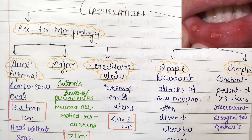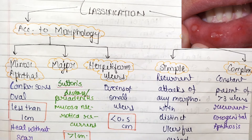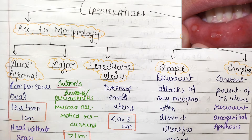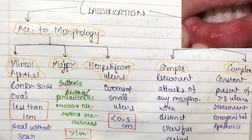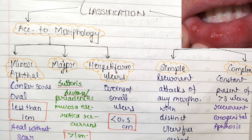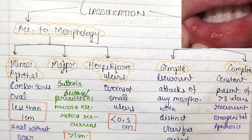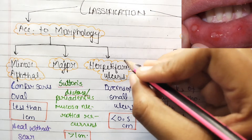In the morphology-based classification: minor aphthae show less than one centimeter ulcerations; major aphthae show more than one centimeter ulcerations; and herpetiform ulcers consist of dozens of small ulcers less than 0.5 centimeters, and they are hundreds in number — that is the main characteristic feature of herpetiform ulcers.